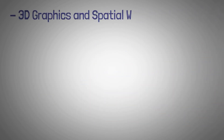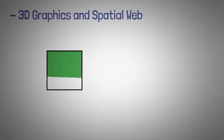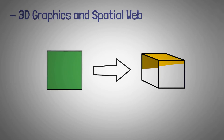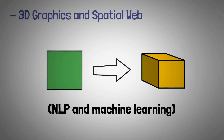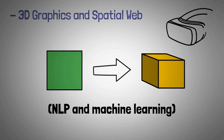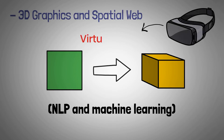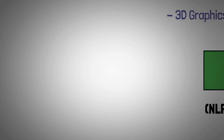3D graphics and the spatial web form another pillar. Web 3.0 can transition from 2D to 3D systems, which will be combined with NLP and machine learning. Sensors, smart glasses, and AR/VR technologies will be used to merge reality and virtual worlds in Web 3.0.